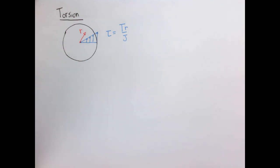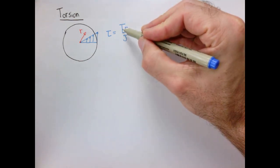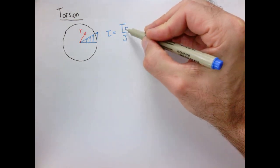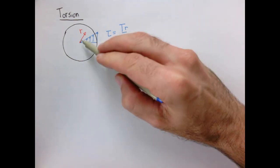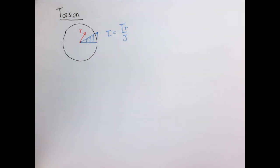In this video, we're going to rework the example of torsion in a circular bar using our formal tensor notation. If you recall, the shear stress over a cross-section of a circular bar in torsion is equal to T times R over J, where capital T is the total applied torque, R is the radial distance from the center, and J is the polar moment of inertia.